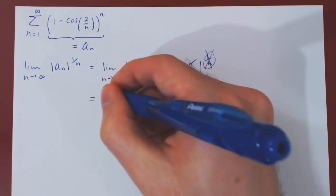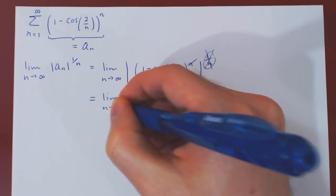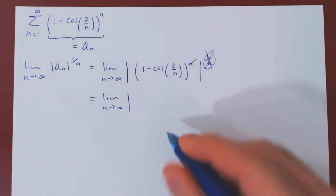And this leaves us with the limit as n tends to infinity of the absolute value of the sequence 1 - cos(2/n).